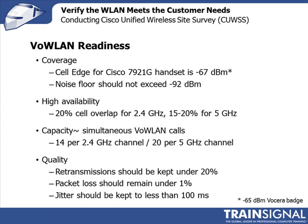When we look at whether your wireless LAN is ready to support voice, there are a number of things we look at. For optimum performance, we want to make sure that when the handset reaches the edge of the cell — where the edge is defined at minus 67 dBm — it is transitioning and handing over to another access point. To ensure high availability, we want access point coverage to overlap: 20% cell overlap in the 2.4 GHz band and 15 to 20% in the 5 GHz band.